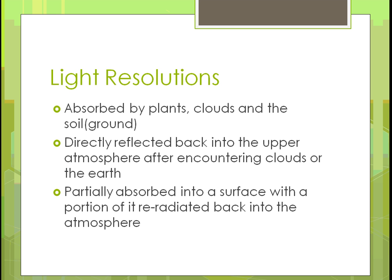Different types of light are absorbed differently — some is absorbed into plants, some into clouds, and some into the soil. As light comes down from the sun, some is directly reflected back up into the atmosphere. When it hits clouds, some goes through depending on the type of light. What reaches the earth warms the soil, but some reflects off the soil back into the atmosphere, bouncing back and forth before eventually escaping to the upper atmosphere.